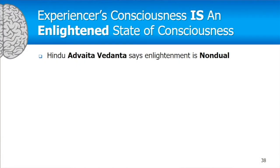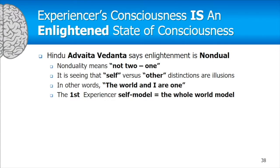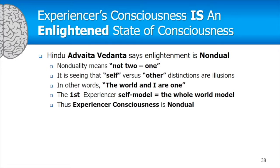There are multiple kinds of enlightenment — for example, Bernadette Roberts reported having two, and Daniel Ingram documents between two and eleven different stages across Buddhist traditions. The Hindu Advaita Vedanta tradition says enlightenment is non-dual, meaning 'not two' — the self and other distinction is an illusion, and the world and I are one. The first experiencer self-model states that the self-model equals the entire world model, so experiencer consciousness is non-dual.